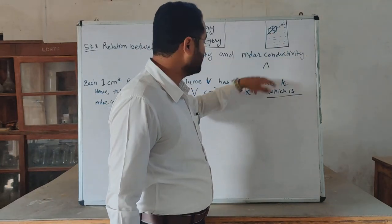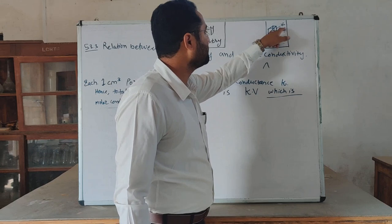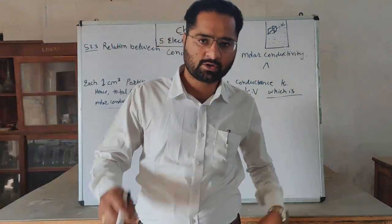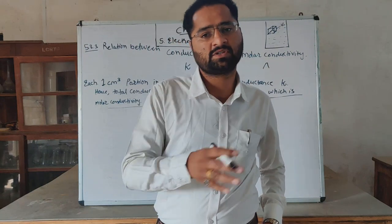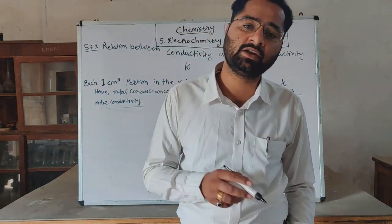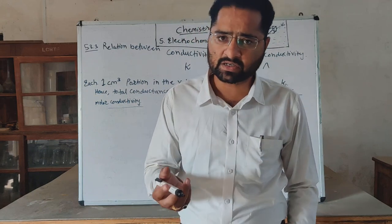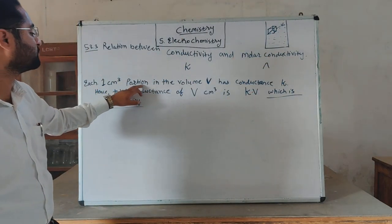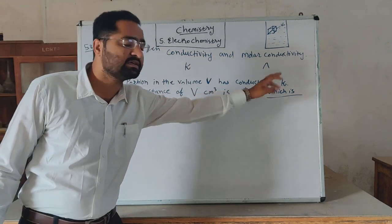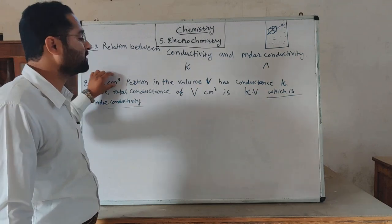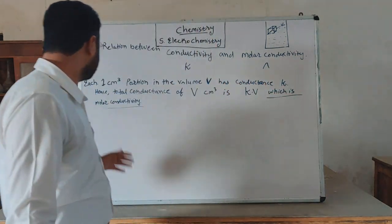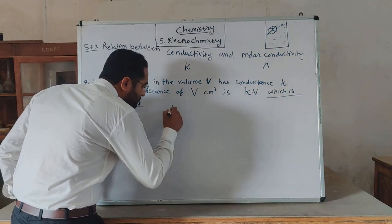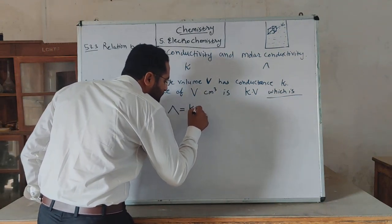K is the conductivity and V is the volume. The total conductance means we consider the whole solution volume containing one mole of electrolyte. Each one centimeter cube portion of volume V has conductance K. Hence, total conductance in volume V centimeter cubed is K times V, which equals molar conductivity.